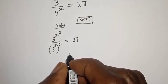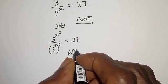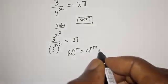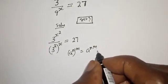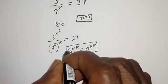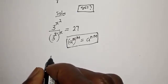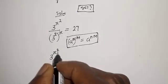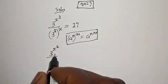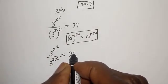Note that if you have a raised to power n, to the power of m, this is equal to a raised to power n times m. So the left hand side is 3 raised to power s squared divided by 3 raised to power 2s, which is equal to 27.